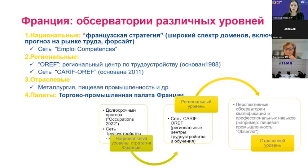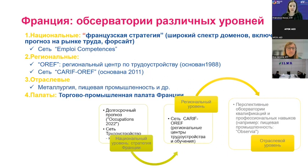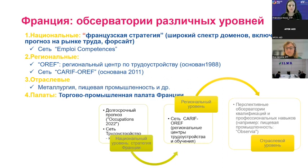There are other countries which work more based on observatories. France is one such case — its labour market information system is structured around a number of observatories called observatoires de branches, which are sectoral observatories. A very well-known one used as an example worldwide is a green skills observatory, which looks particularly at the new skills emerging linked to green occupations. France has both national and regional observatories, creating a matrix of different entities each with a specific point of observation.